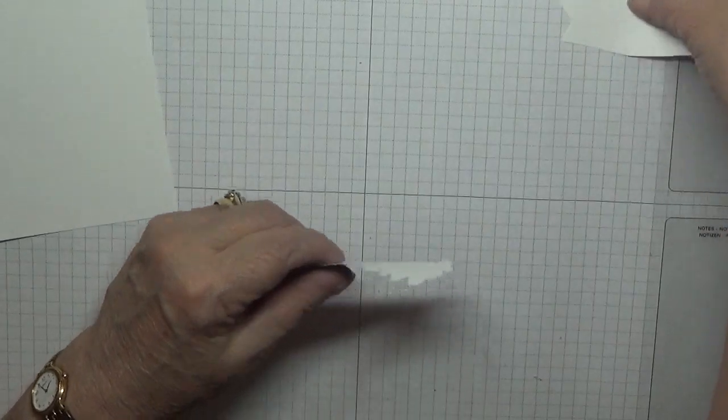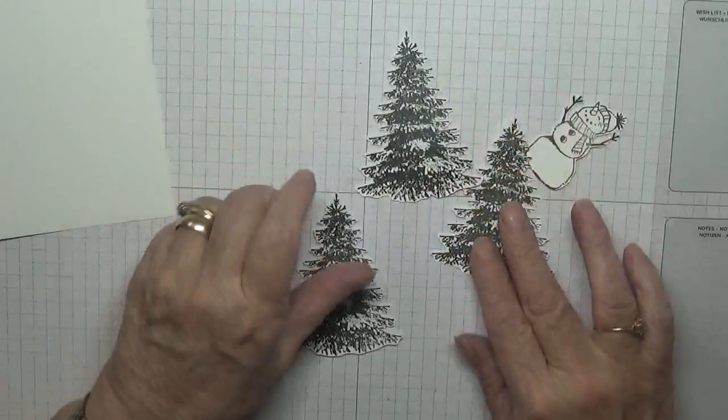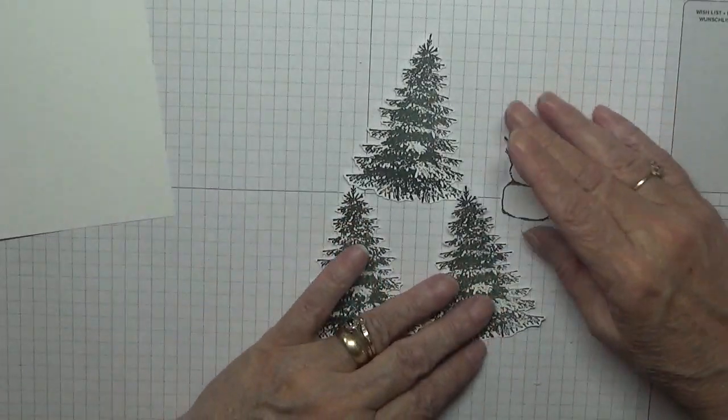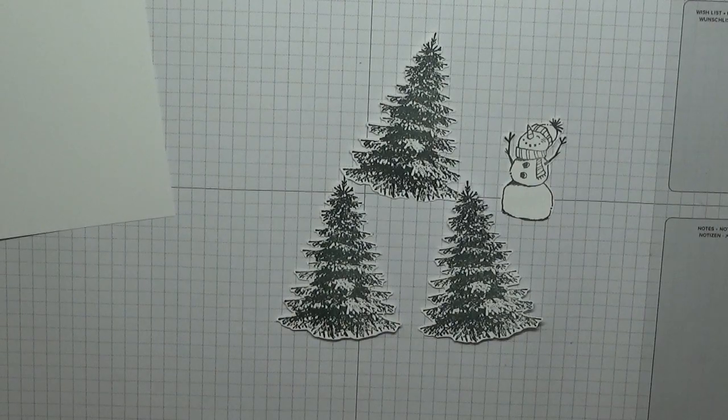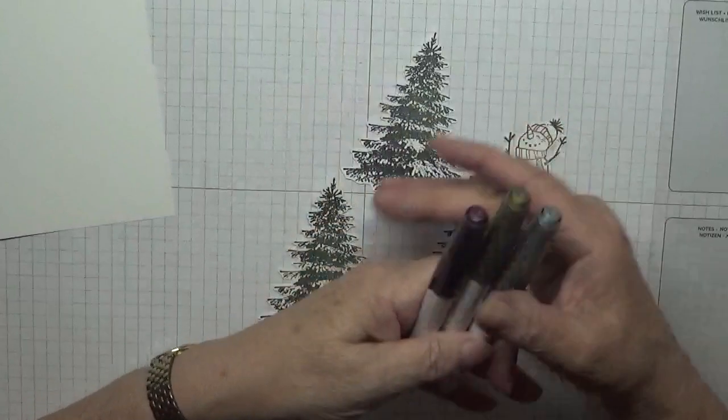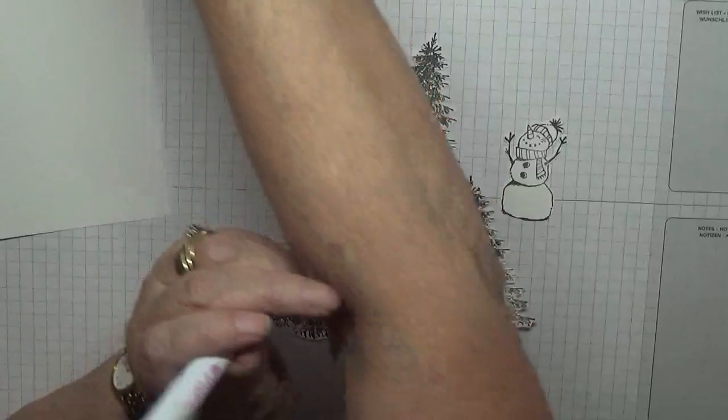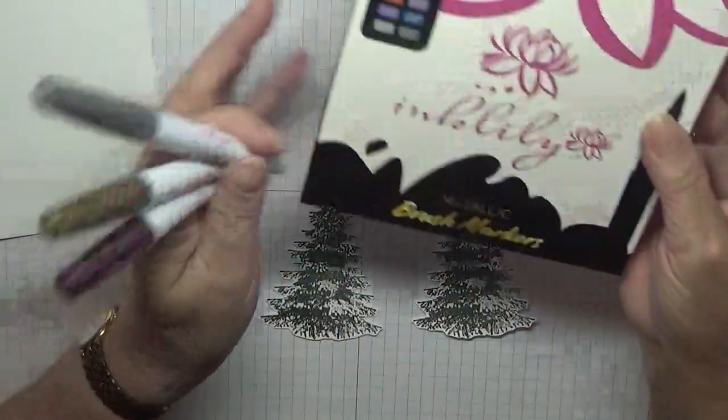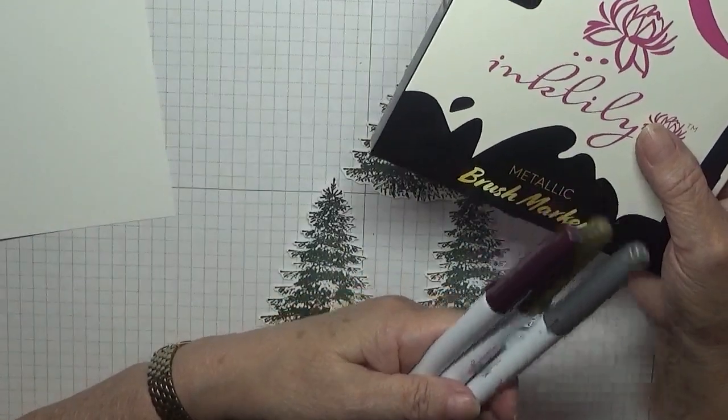Right, and there is our three trees and our snowman. But now we've got to decorate our trees and if you remember my first comeback card I said I got some metallic markers in a goodie bag and I'm going to use them today.